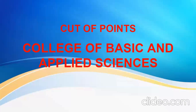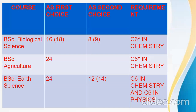Let's go to cut-off points for the College of Basic and Applied Sciences. Let me explain this table. In this table we have four columns: the course, first choice, second choice, and requirement. Note that the University of Ghana is one of the most competitive universities, especially if you are applying as a fresher. It's very competitive.